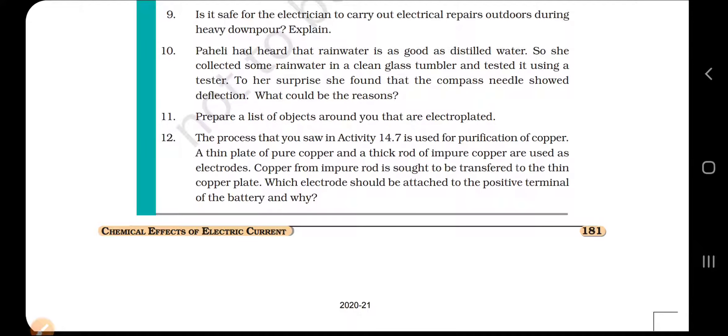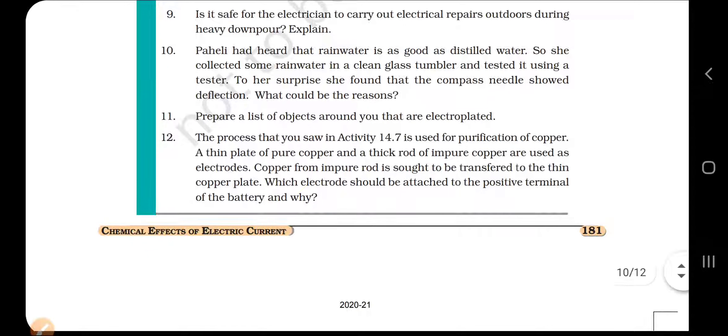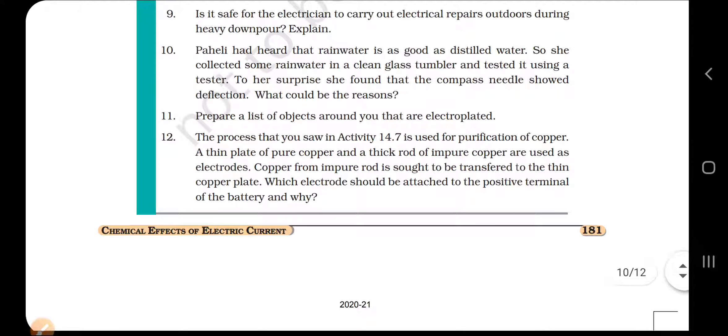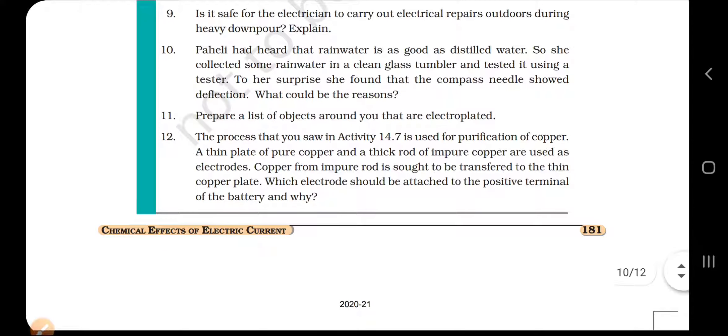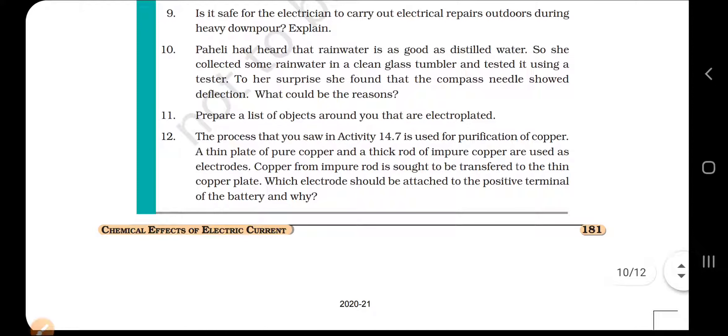The impure metal should be attached to the positive terminal of the battery. Which electrode? The impure metal, the impure copper metal should be attached to the positive terminal of the battery. And the pure copper metal should be attached to the negative terminal of the battery or should be made the cathode.